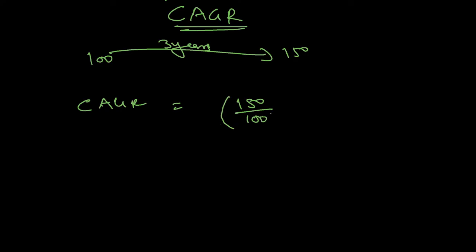...to the power 1 by 3, because it is for 3 years. So you are compressing it to 1 by 3, which is equal to 0.33, and then minus 1.